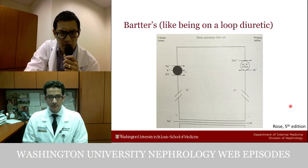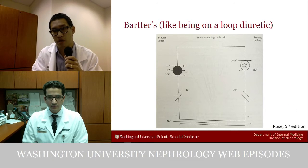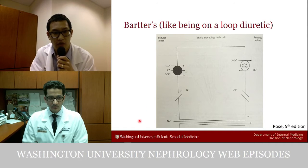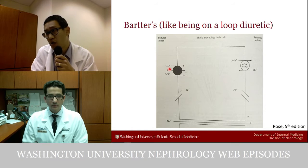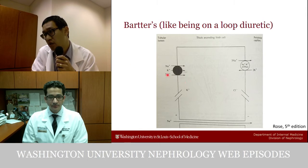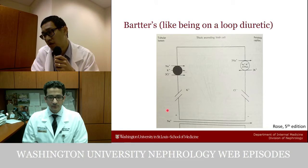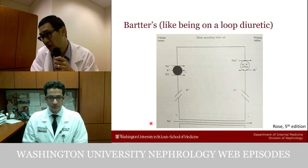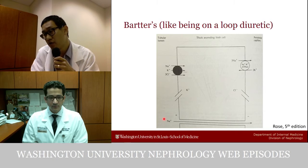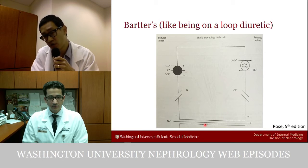This picture is from Burton Rose's text on fluid and electrolytes. In Bartter's — like a loop diuretic blocking the NKCC2 — under normal circumstances, reabsorption of sodium-potassium-2-chloride causes potassium to be recycled and chloride to be reabsorbed on the basolateral side, creating a positive charge in the lumen. This electrical gradient drives paracellular reabsorption of cations like calcium and magnesium. Blocking this transporter eliminates that gradient and causes calcium to be lost in the urine.